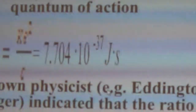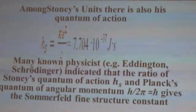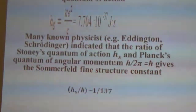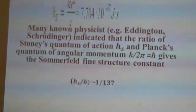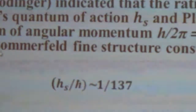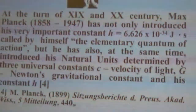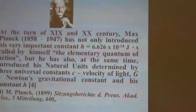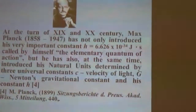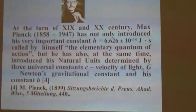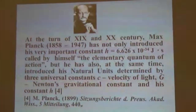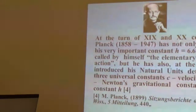Many known physicists — including Schrödinger — indicated that the ratio of Stoney's quantum of action to Planck's quantum of angular momentum — that is, his constant h divided by 2π — gives the Sommerfeld fine structure constant. At the turn of the 19th and 20th century, Max Planck not only introduced his very important constant, called by him the elementary quantum of action, but he also at the same time introduced his natural units determined by the three universal constants C, G, and his constant H.